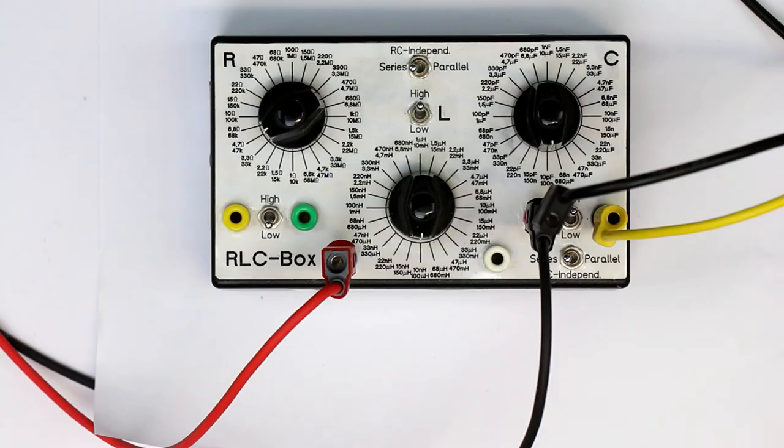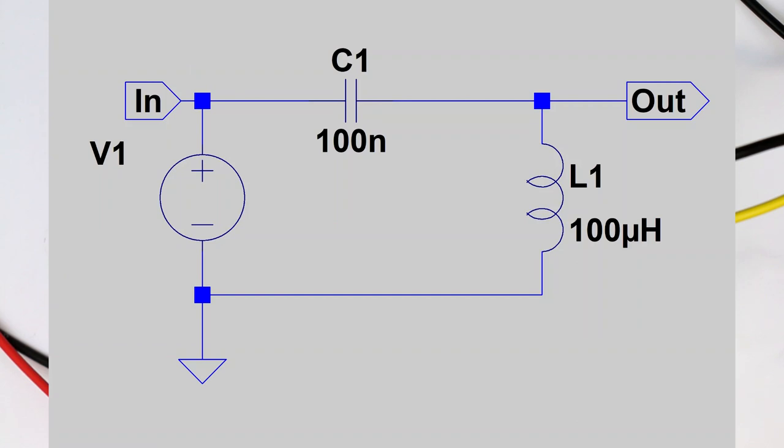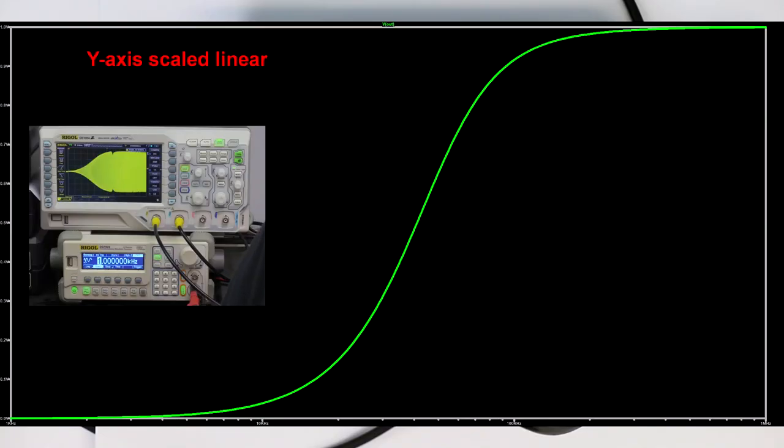Let's change the components again to make an LC high-pass filter. Here is our high-pass filter, and it looks nearly exactly like the simulation in LTSpice.